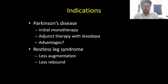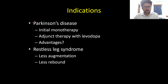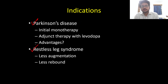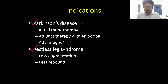Now, where do we use ropinirole? There are two important approved indications. The first is Parkinson's disease and the second is restless leg syndrome. For Parkinson's disease, the first scenario is a young patient with Parkinson's disease.